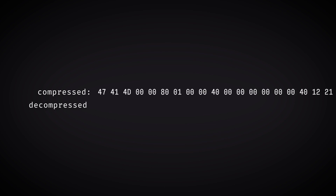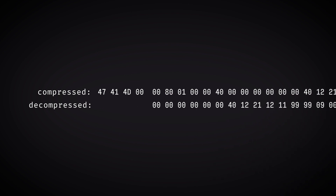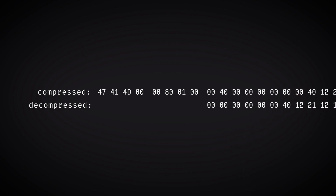Let's compare the compressed data with the decompressed data and find as many similarities as we can. A naive but effective method is just pasting a segment of the bytes into a text editor — the compressed data on row 1 and the decompressed data on row 2. We can probably ignore the first 4 bytes; after all, it reads 'gam' as plain text, so it's likely some kind of identifier to tell that the data is compressed. We can also ignore the 4 bytes after that for now.